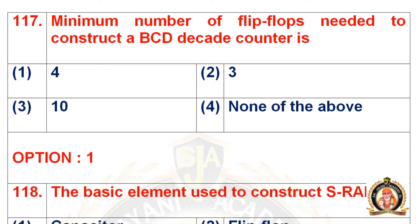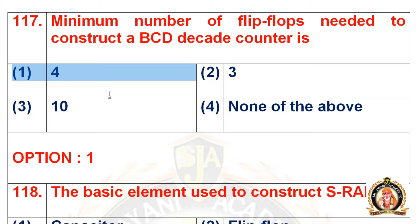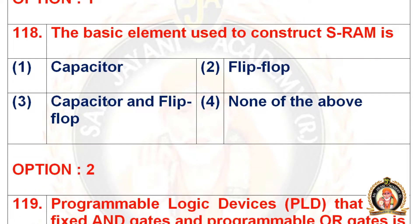Question 117: The minimum number of flip-flops needed to construct a BCD decade counter is. Options are 4, 3, 10, and none of the above. The right option is the first option, that is 4 flip-flops are needed to construct a BCD decade counter.